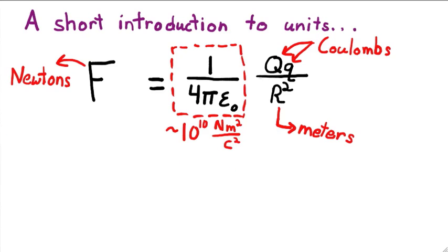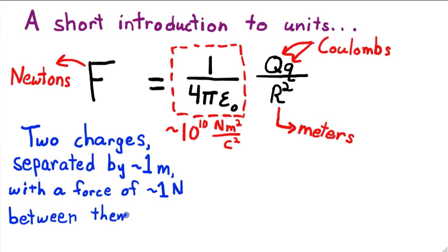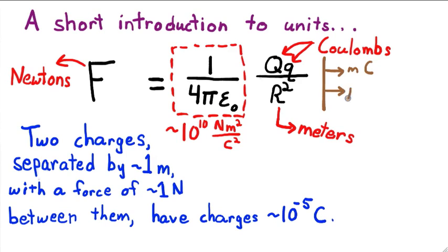That means that two comparable charges, separated by an everyday size distance and with an everyday size force between them, have very small charge magnitudes when measured in Coulombs. That means the Coulomb is not a good unit for the types of problems we'll be solving. So when we encounter problems in textbooks, the charges that normally appear are measured in milli, micro, and even nanocoulombs.